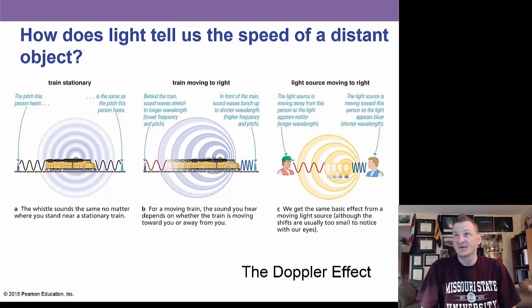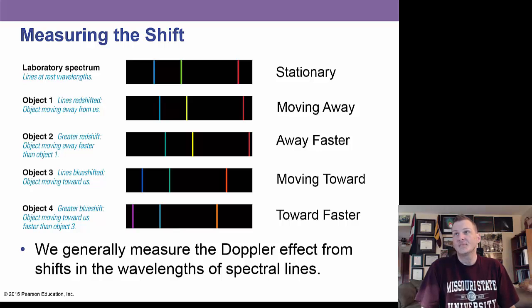Now, light can also tell us about the speed of a distant object, and this is through the Doppler effect. And we have things like red shifts and blue shifts that we look at. If we look at a laboratory spectrum, and we see these blue, green, and red lines that are stationary, if they shift towards the red side, it's moving away. And that is called a red shift. If they move even farther to the red, it's moving away even faster. If they go towards the blue side, then it's moving towards us, and that's called a blue shift. And the more blue shift there is, the faster it's moving towards us.